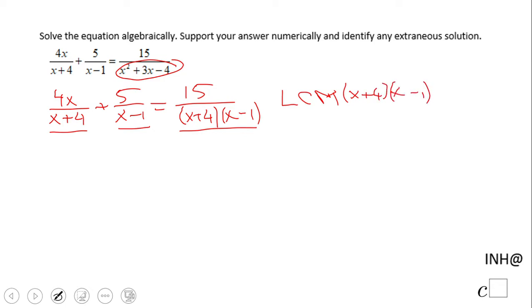So we multiply by x plus 4 times x minus 1: 4x over x plus 4 plus 5 over x minus 1, close this parenthesis. And on the other side we're going to do the same thing: 15 over x plus 4 times x minus 1.